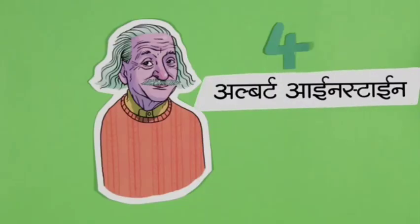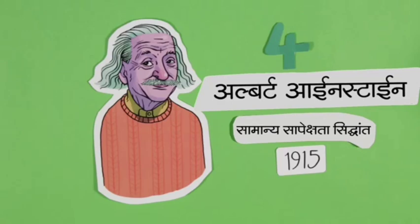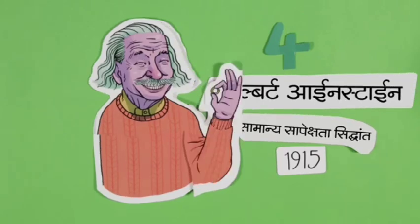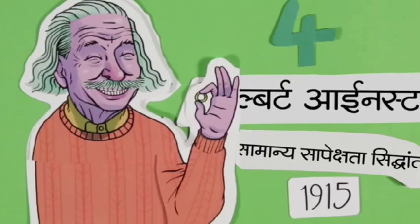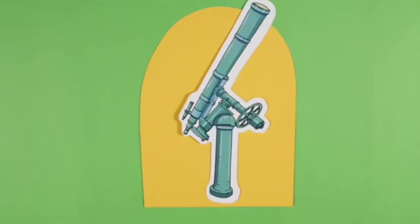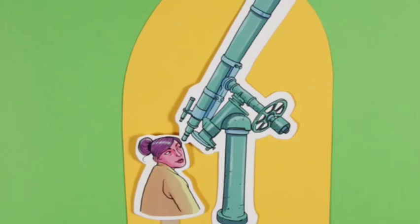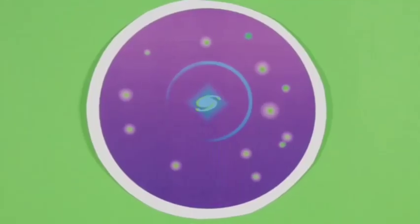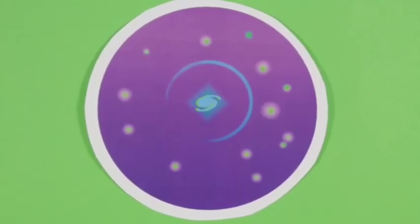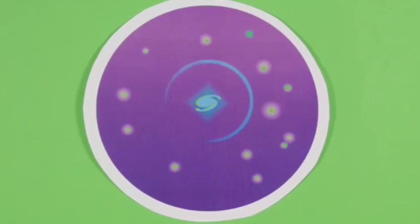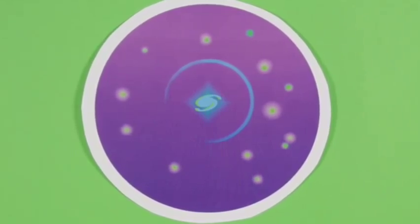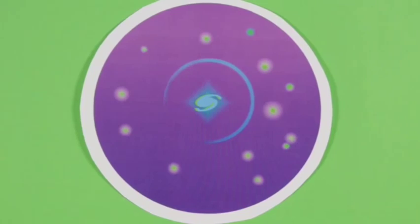हमारे अगले हीरो अल्बर्ट आइंस्टाइन पर मैक्सवेल का भारी प्रभाव रहा। आइंस्टाइन ने एक सिद्धांत बताया जिससे मानो हमारे हाथों में सभी तालों की चाबी आ गई। आपके सामने अगर कोई बड़ी चीज है तो उसके पीछे दूर रखी छोटी चीज नजर नहीं आती। लेकिन अगर आकाशगंगा की बात करें तो वह एक बहुत ज्यादा गुरुत्वाकर्षण बल वाली वस्तु से बहुत दूर रहकर भी विपरीत दिशा से देखी जा सकती है।